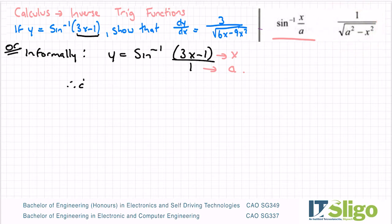So therefore dy/dx is equal to 1 over the square root of a squared. So 1 squared minus x squared and my x is 3x minus 1. It's a chain rule, so I must multiply it by the inner function differentiated. So don't forget this part if you're doing chain rules informally.